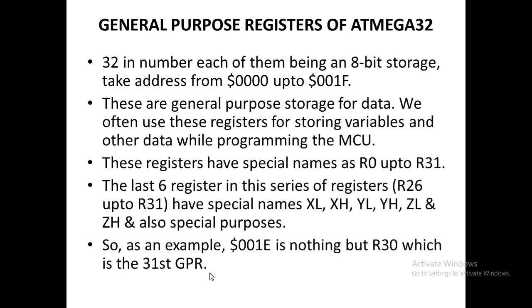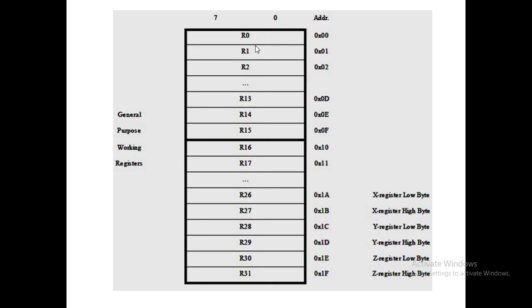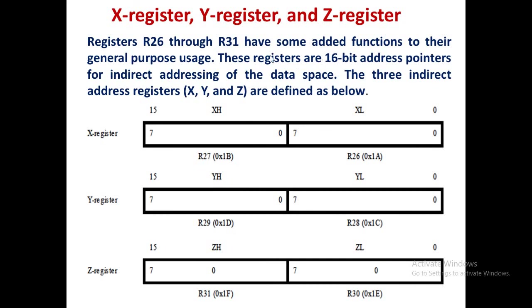There are 32 GPRs — R0 to R31. The addresses are generally not used directly in programs; we use R1, R2, R3 and so on. Then the XYZ registers are in word size — that is 16 bits — with lower byte and higher byte. XL and XH, YL and YH, ZL and ZH correspond to register pairs R26–R27, R28–R29, and R30–R31.